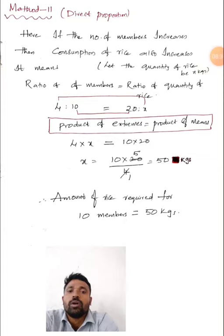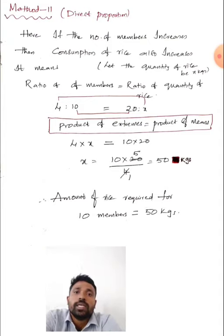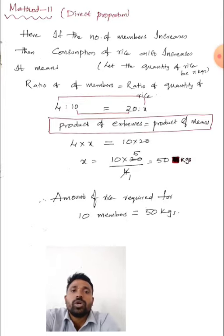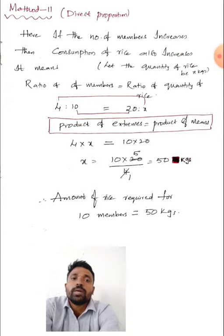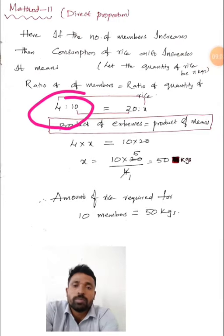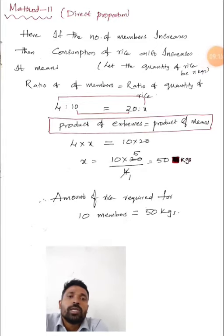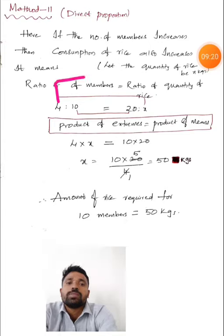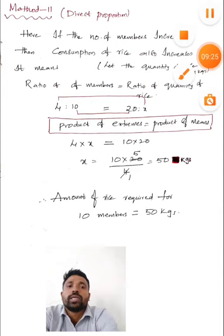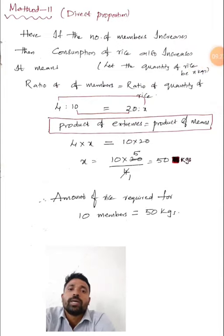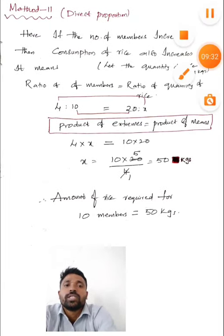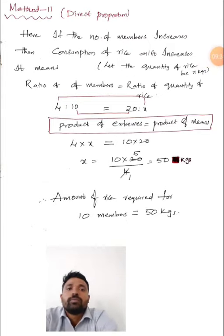Now solving the same problem by direct proportion. If the number of members increases, the quantity of rice also increases — both are in direct proportion. Ratio of members = ratio of quantity of rice: 4:10 = 20:x. Applying the proportional condition: 4 × x = 10 × 20, so x = 200/4 = 50 kg. Amount of rice required for 10 members = 50 kg.